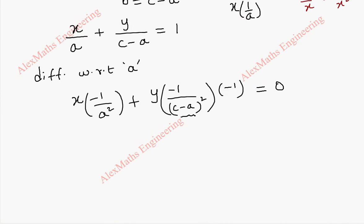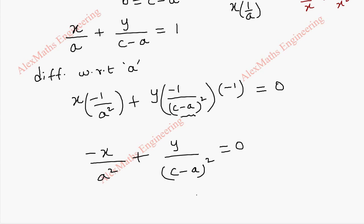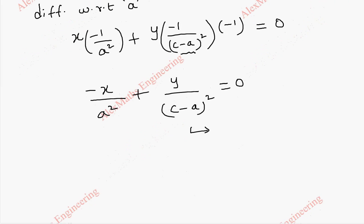So this becomes -x/a² + y/(c-a)² = 0. Taking one term to the other side gives us x/a² = y/(c-a)².